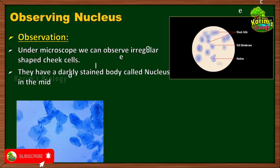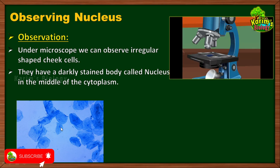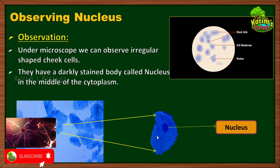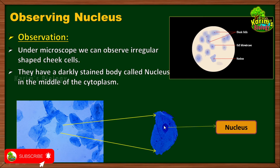When you observe the cells under the microscope, you will notice that cheek cells are irregular in shape — they are not a specific shape because they do not have a cell wall. They have a darkly stained body at the middle of each cell. If you enlarge a single cell, you can see the irregular margins, the jelly-like cytoplasm inside, and a darkly stained, larger body called the nucleus, which controls all activities of the cell.